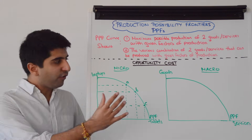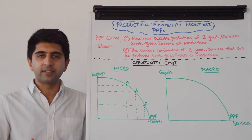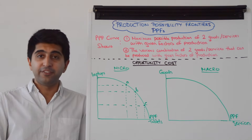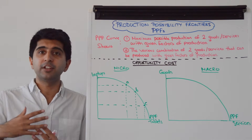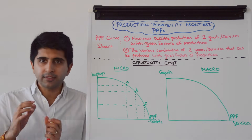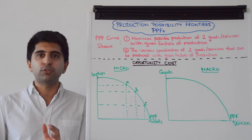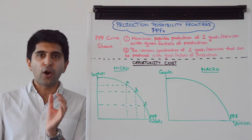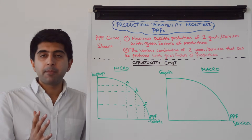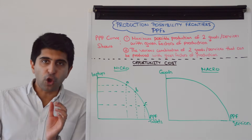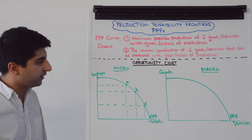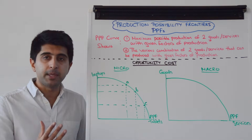The beauty of these diagrams, these curves, is that we can show concepts like opportunity cost and efficiency, and we can understand how production can be increased as well. So let's start by looking at how we can illustrate the concept of opportunity cost on PPFs. The shape of a PPF can tell us about the opportunity cost of producing goods and services.